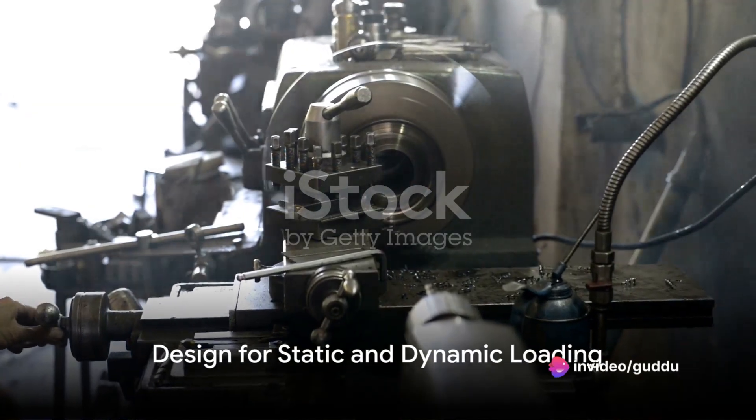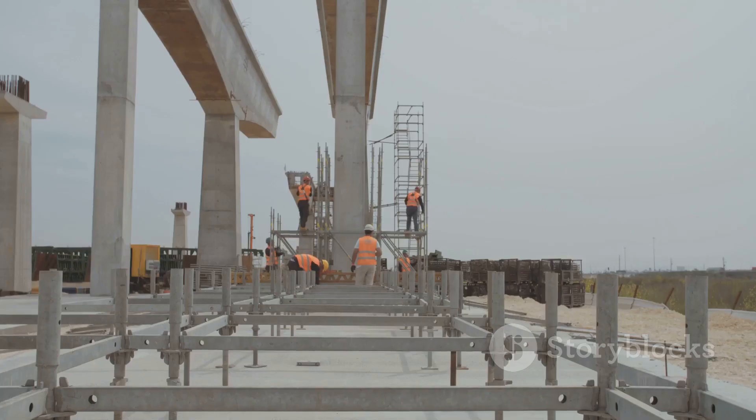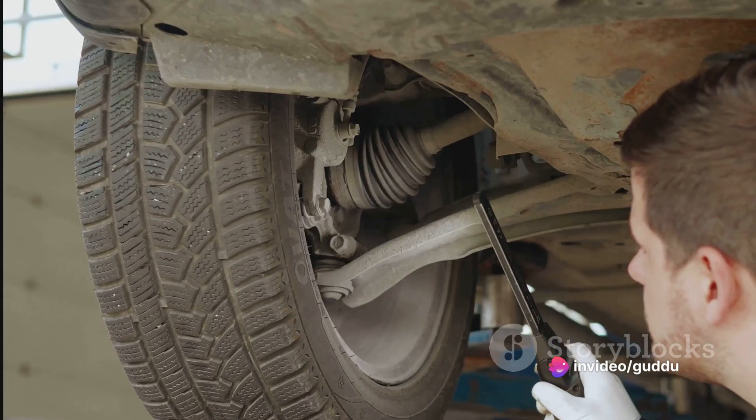Let's start by exploring design for static and dynamic loading. In the realm of machine design, every machine experiences two types of load: static and dynamic. Static load is a constant load that remains unchanged over time, like the weight of a bridge. Dynamic load,